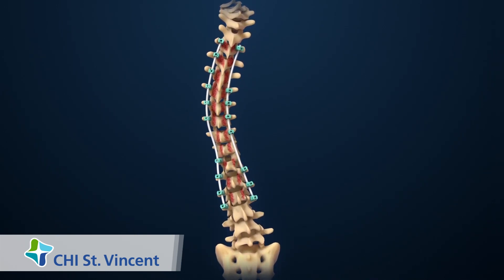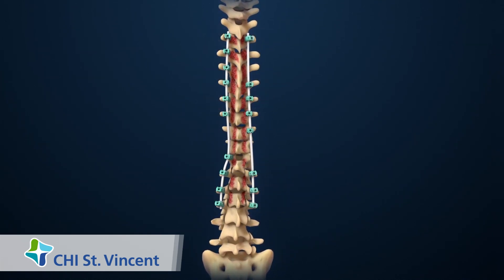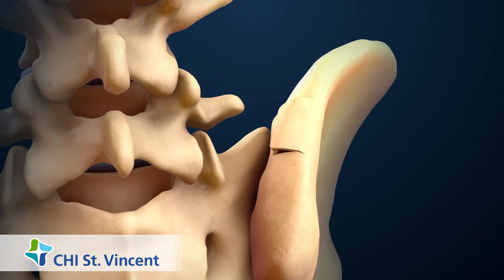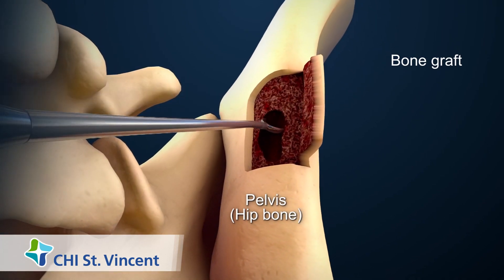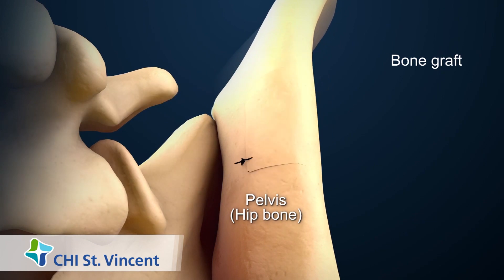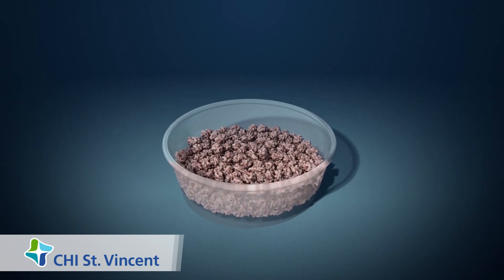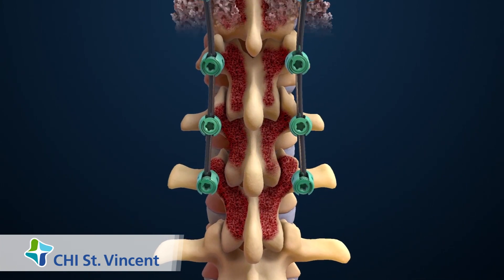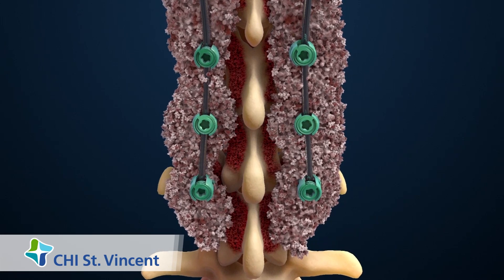Rods will be placed alongside the vertebrae and attached to the screws, hooks, or wires in order to straighten the spine. The surgeon may remove small pieces of bone from the ribs or hip bone to use as bone grafts, or may choose to use donor bone from a bone bank for grafting. The bone grafts are placed along the spine to allow the vertebrae to grow together and keep the spine stable.